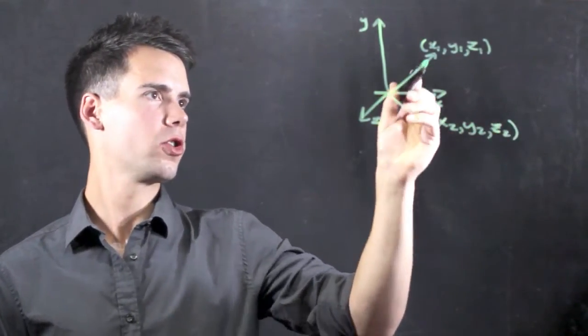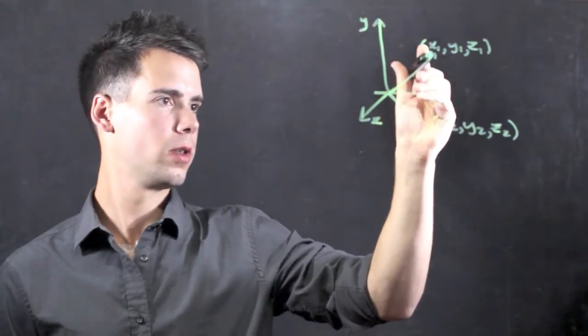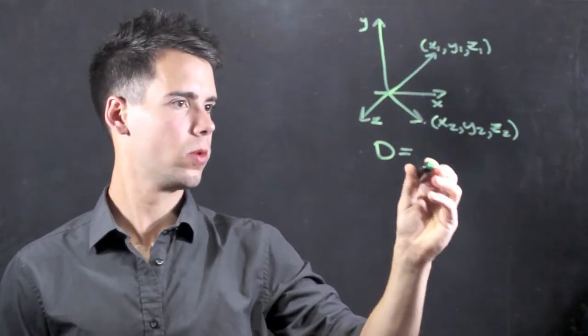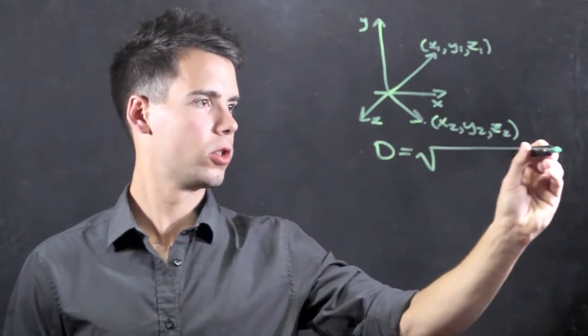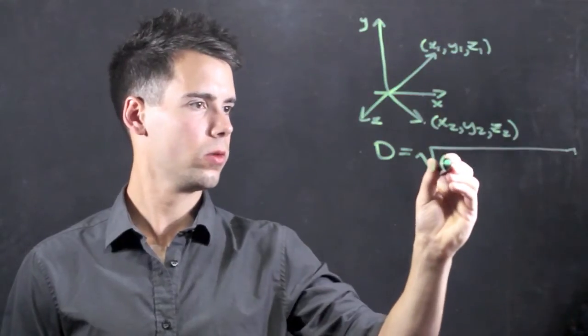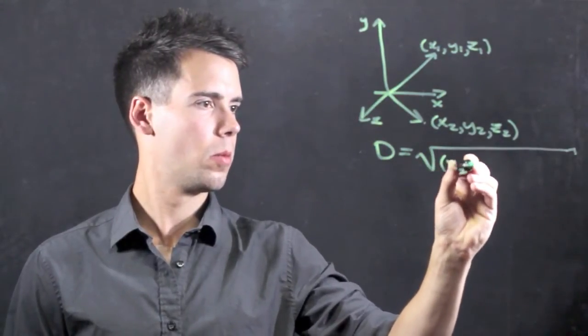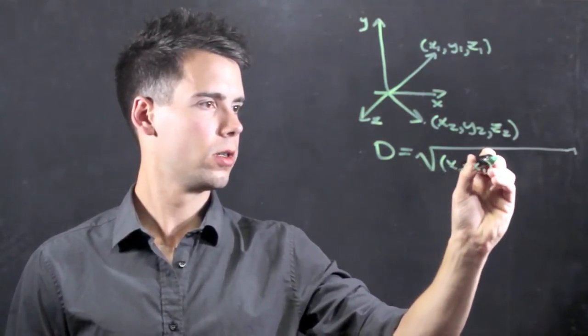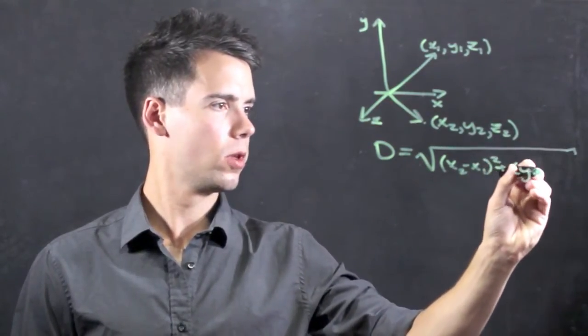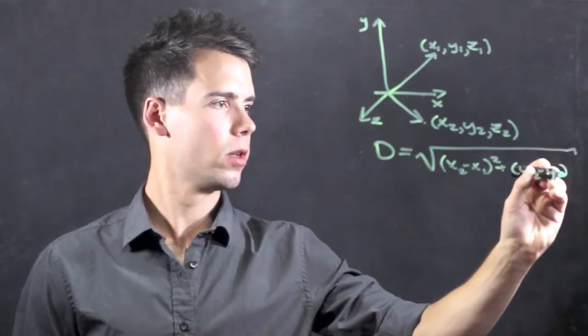Now, the equation for the distance between these two points is simply d equals the square root of (x2 minus x1) squared plus (y2 minus y1) squared.